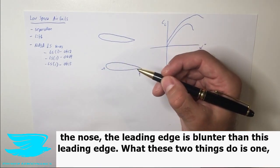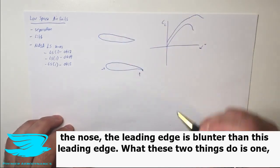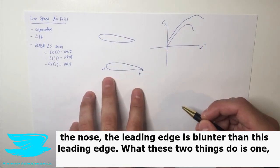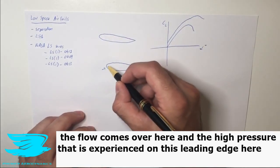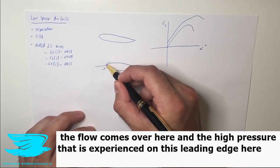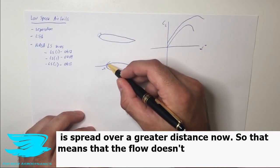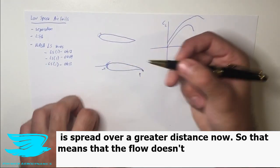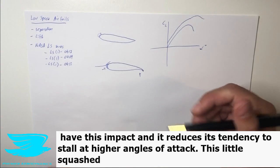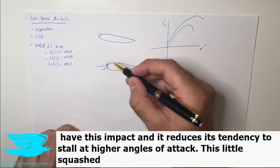What these two things do is one: the flow comes over here and the high pressure that is experienced on this leading edge here and leading edge here is spread over a greater distance now. So that means that the flow doesn't have this impact and it reduces its tendency to stall at higher angle of attack.